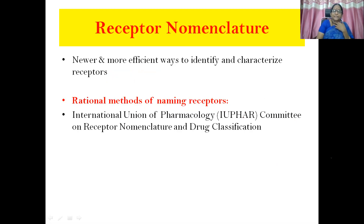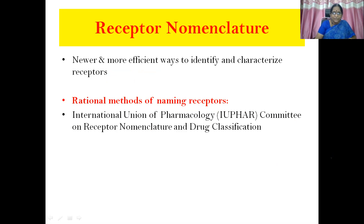Then, receptor nomenclature — newer and more effective ways to identify and characterize receptors. We have receptor nomenclature and drug classification given by the International Union of Pharmacology Committee, IUPHAR.